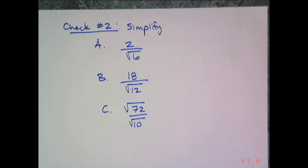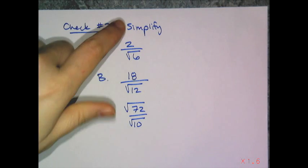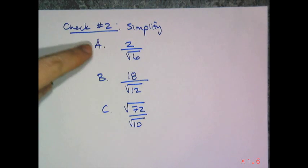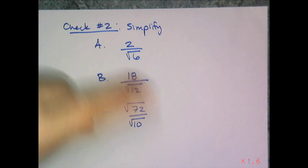Now let's check and see if you can rationalize the denominators on your own. So I want you to simplify these three radical expressions, 2 over root 6, 18 over root 12, and root 72 over root 10.